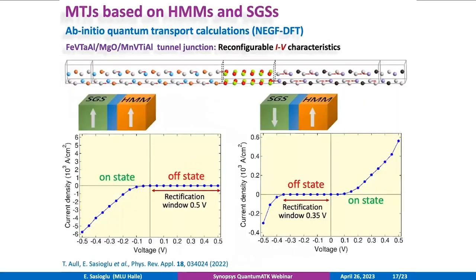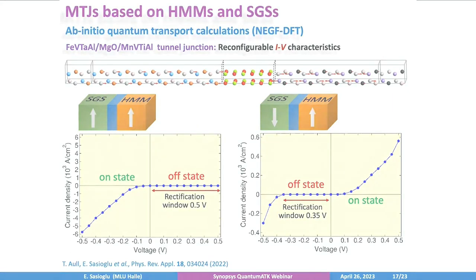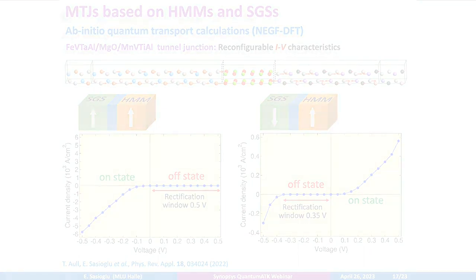When we reverse the direction of the magnetization of one electrode of the magnetic tunnel junction, the corresponding IV curve is also reversed. However, the on-state current density is significantly different from that obtained in the parallel orientation. Moreover, the rectification window in the off-state exhibits marked differences as well.